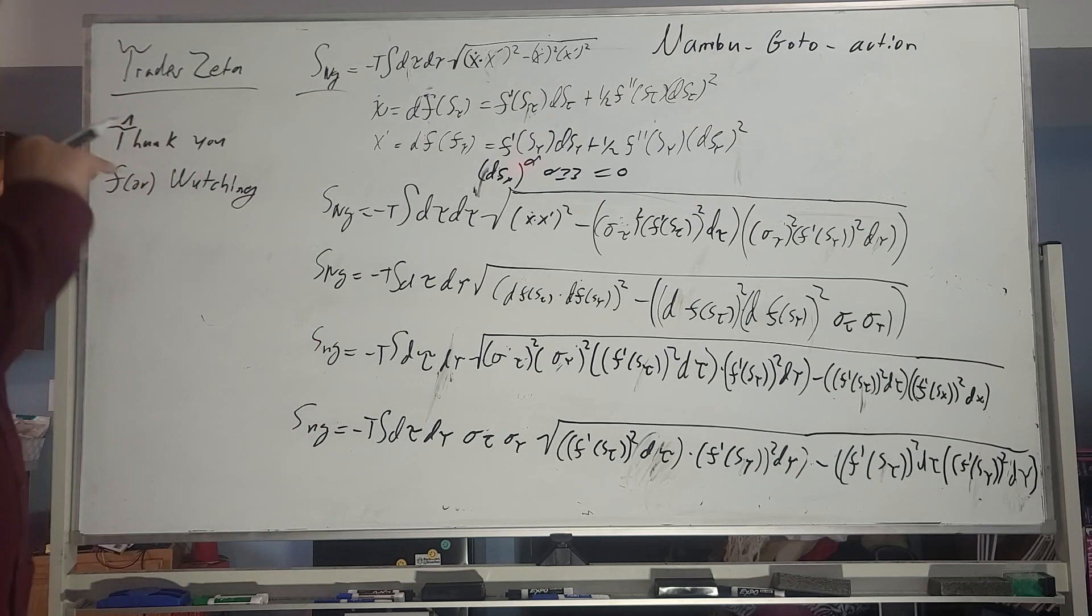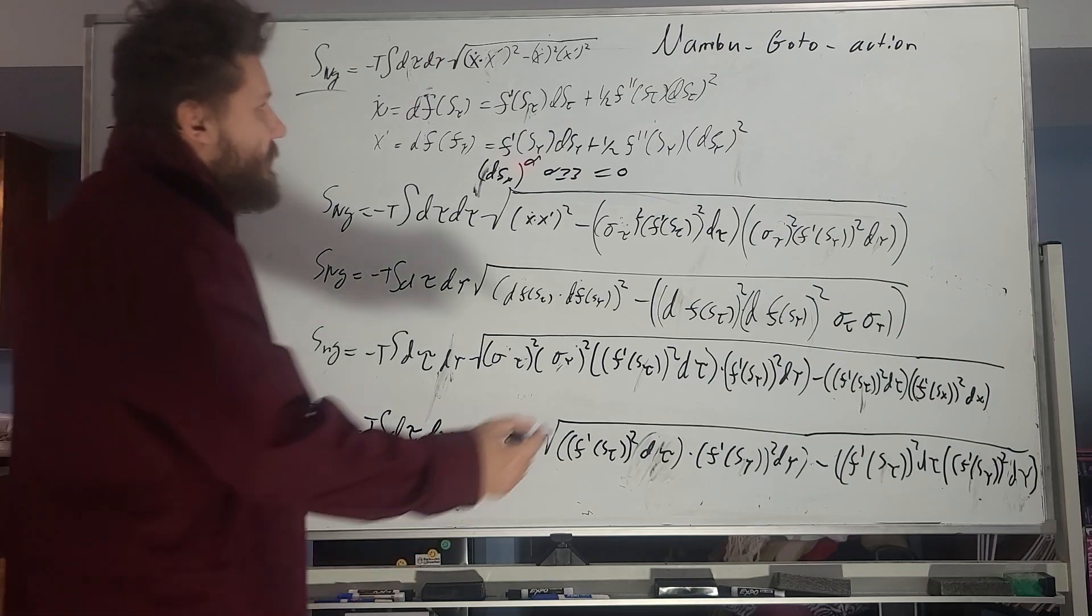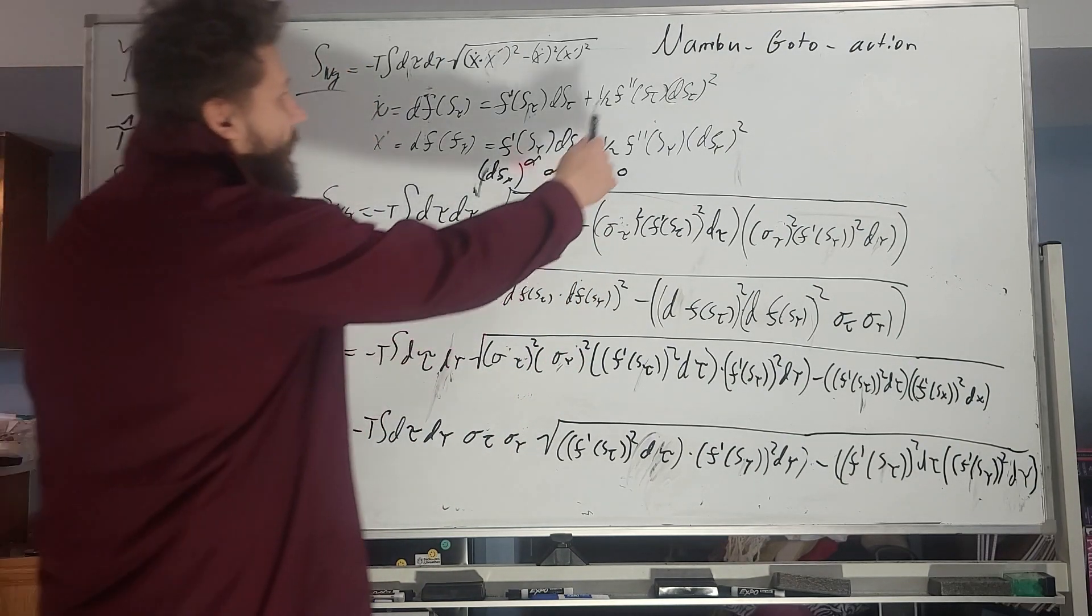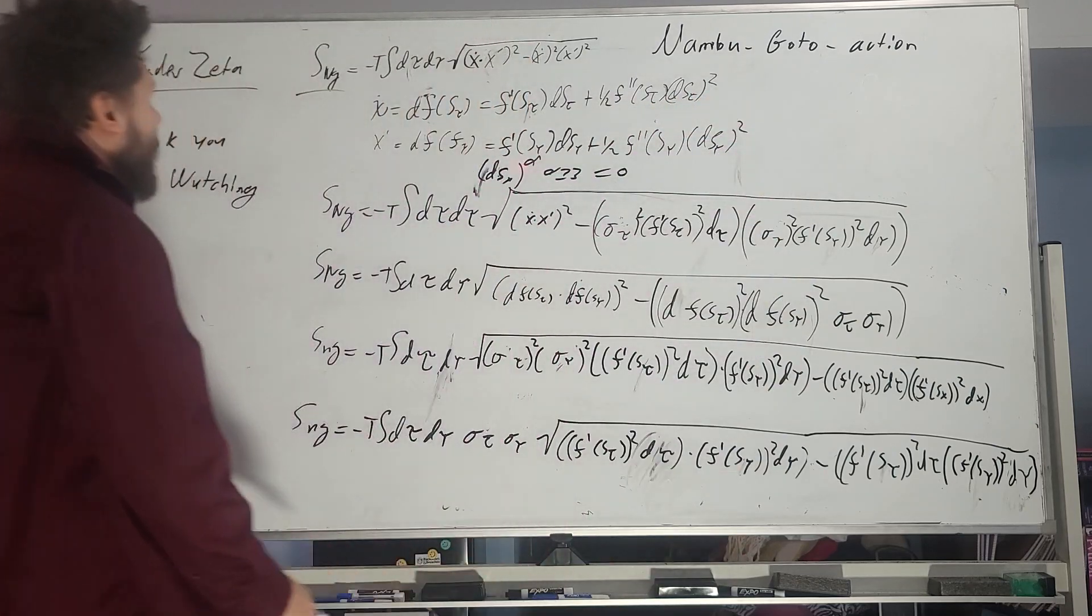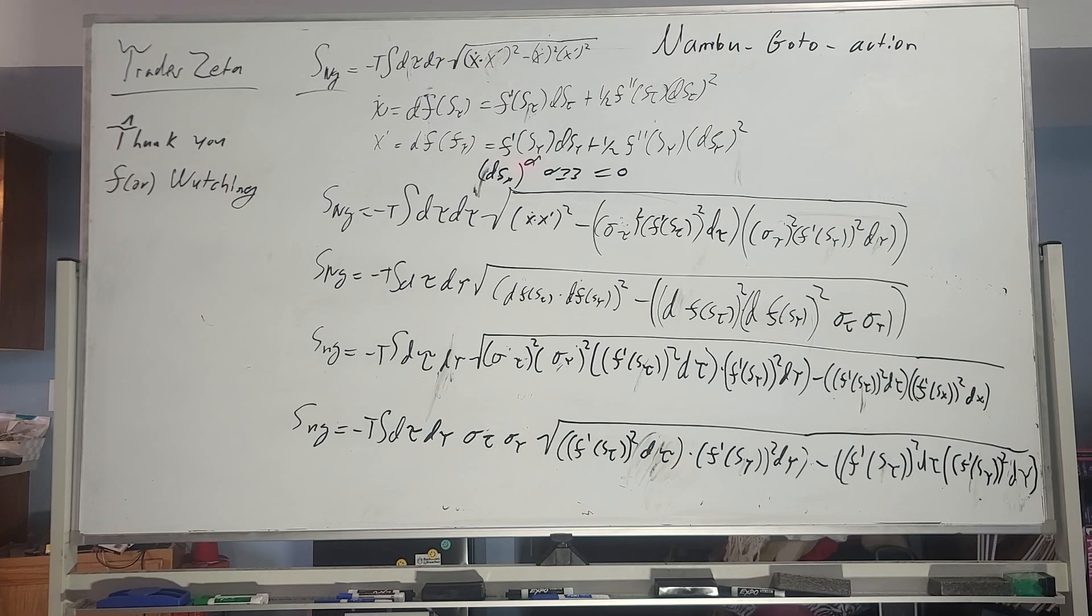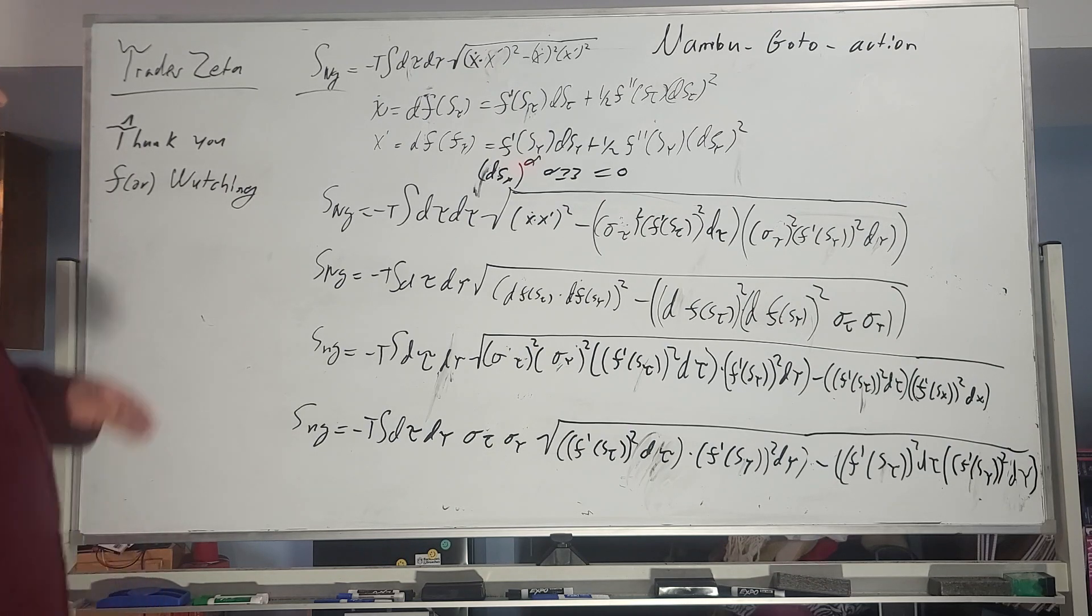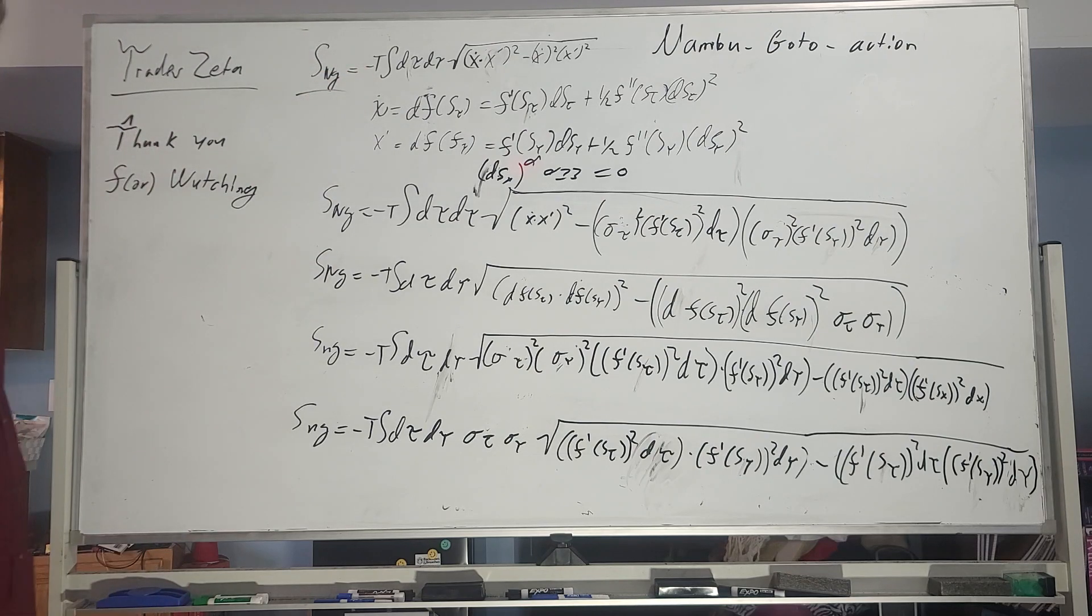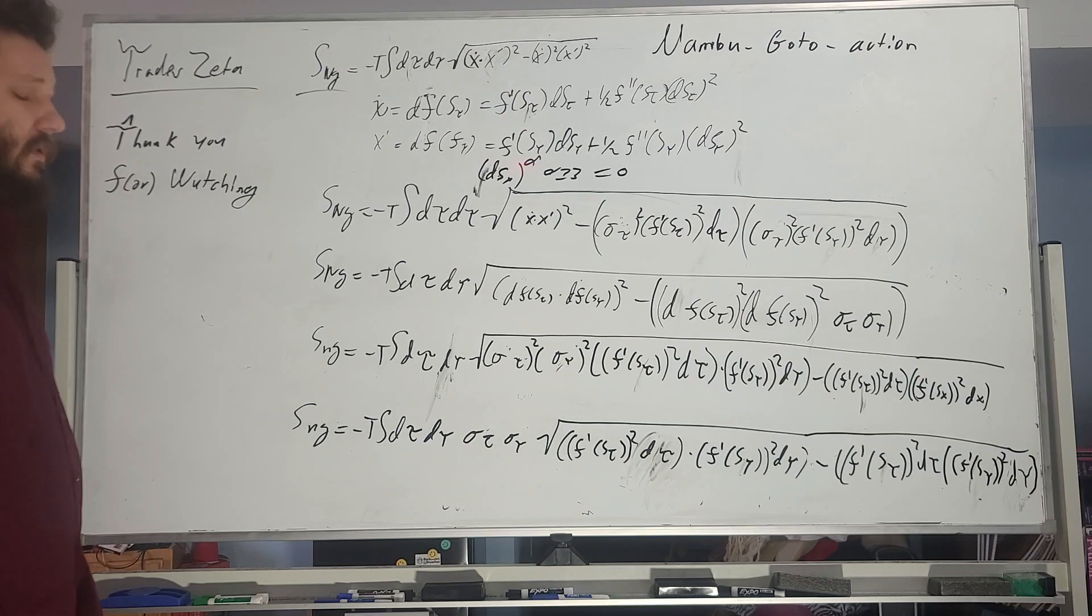In the first kind of chapter or so, they formalized a relativistic string with something called Nambu-Gato action, okay? And the Nambu-G apparently stands for relativistic, I think. Anyway, so we have equals negative T. T is the tension of the string, and essentially that's related to the Regge trajectory.